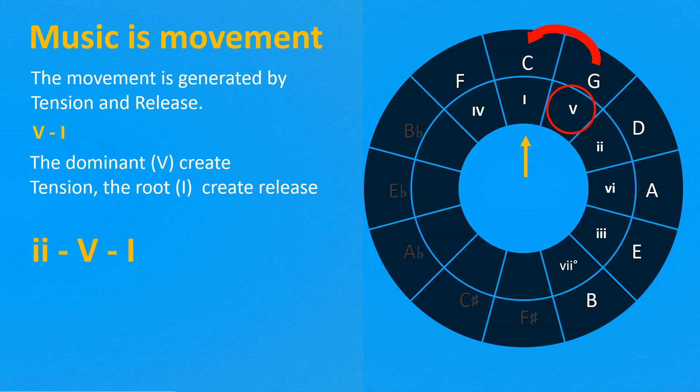Now let's take the 2-5-1 progression. The 2 is positioned on the circle of fifths just before the dominant of the scale. That's really interesting since we can say the progression 2-5-1 is equivalent to the progression 5-5-5-1. In fact, the 2 has to resolve to 5 as it is the dominant of the dominant.